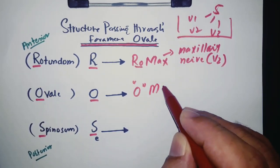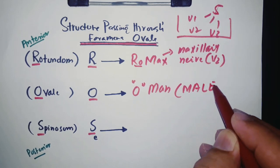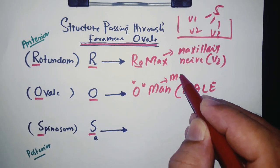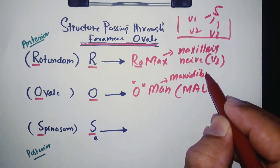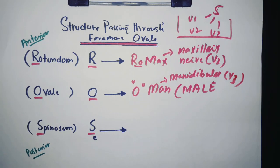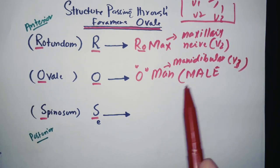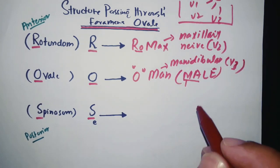Now for ovale, just remember OMEN, and the MEN can also be called MALE. So O means ovale and MEN means mandibular nerve, which we also call V3, which is the third branch of fifth cranial nerve. For MALE, I will explain it later, just wait.